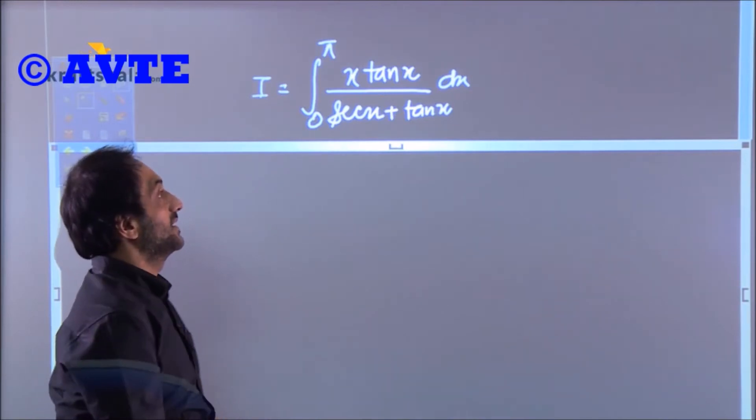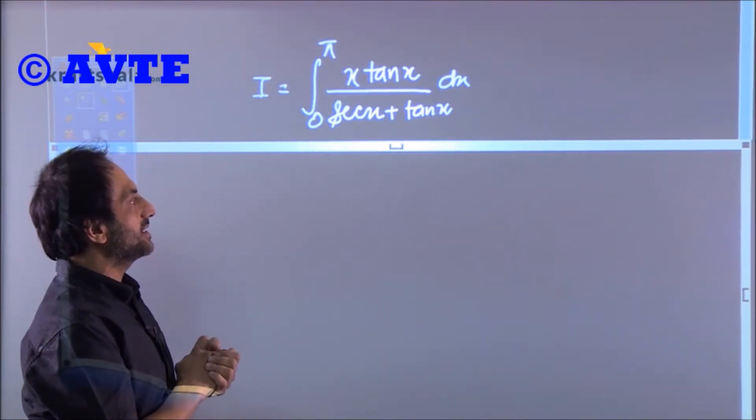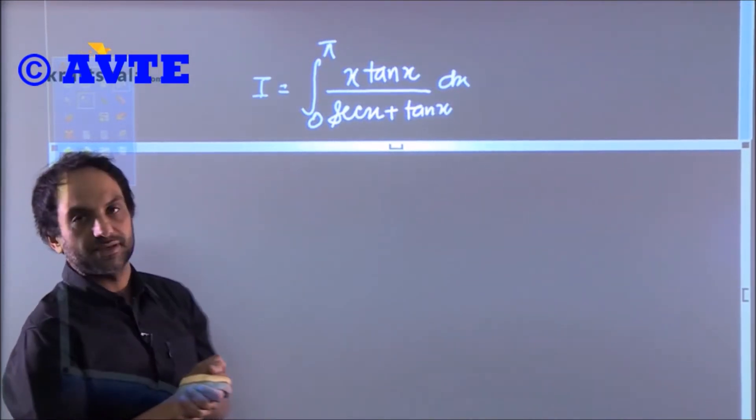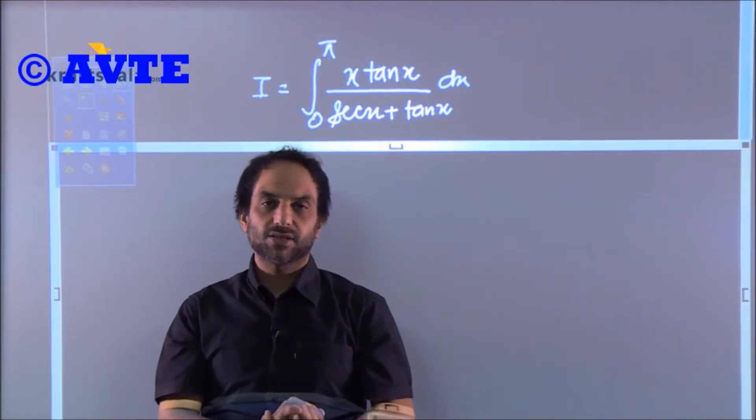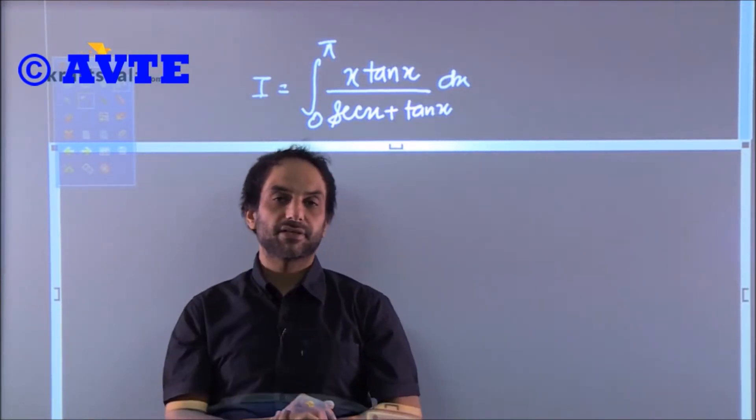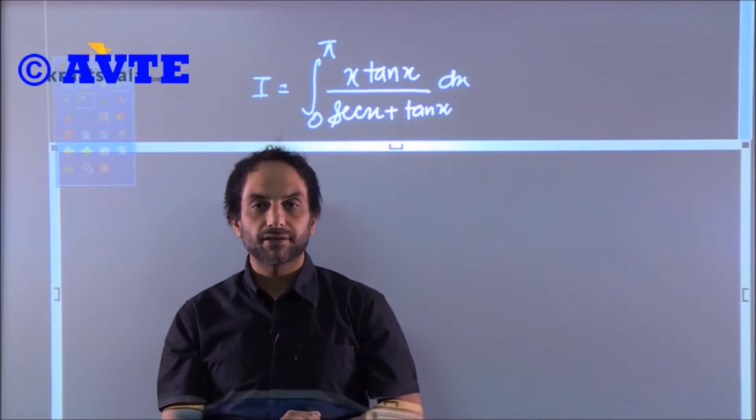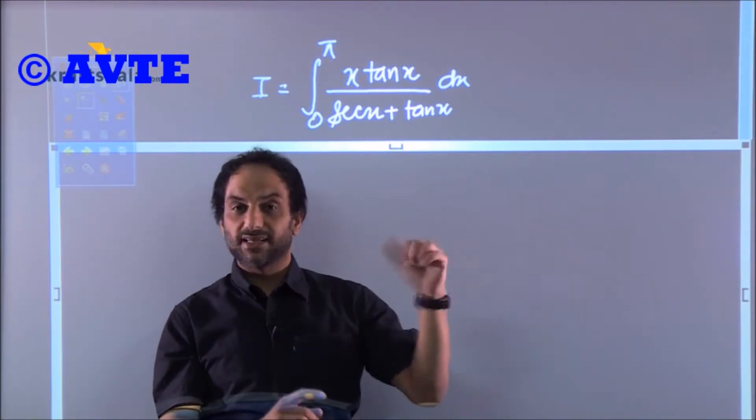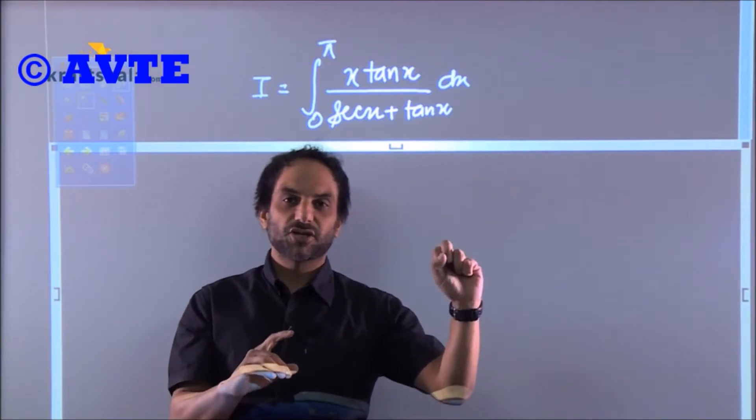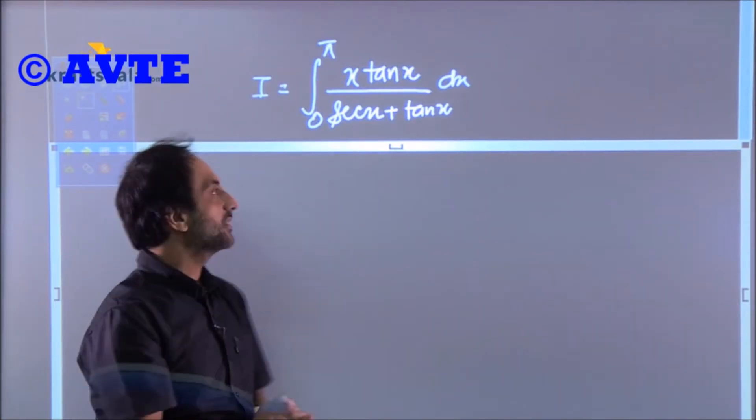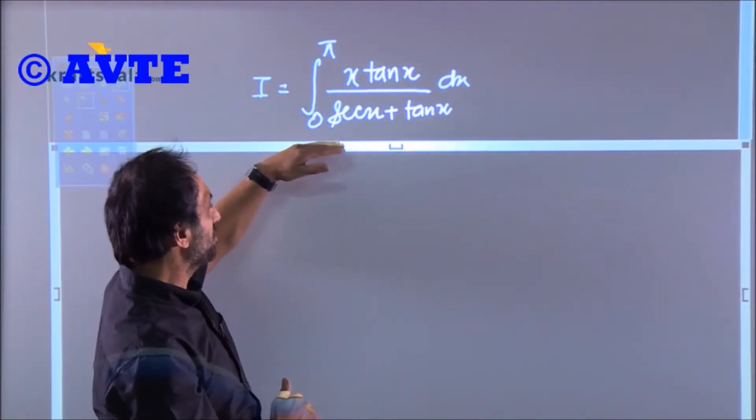Another question: integrate from zero to π of (x tan x)/(sec x + tan x) dx. If this question comes without the limits, one could rationalize and do it using integration by parts because it is a mixed function—algebraic on one side and trigonometry on the other. But what's the use? Can we use the properties?